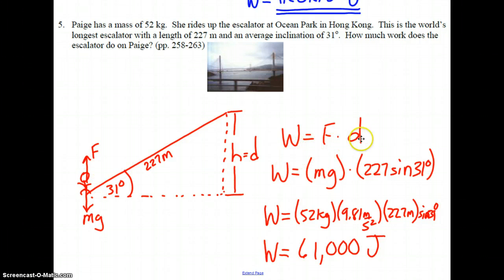So, again, we start with W equals F times D. The force applied by the escalator is to overcome Paige's weight. And the displacement is 227 sine of 31 degrees because the height of the escalator, the D value, labeled in this diagram, is opposite the 31 degrees with 227 meters being the hypotenuse. We now substitute 52 is her mass, 9.81 meters per second squared for little g, 227 meters times the sine of 31 degrees, and to two digits we get a work done by the escalator of 61,000 joules, or 6.1 times 10 to the 4th joules.